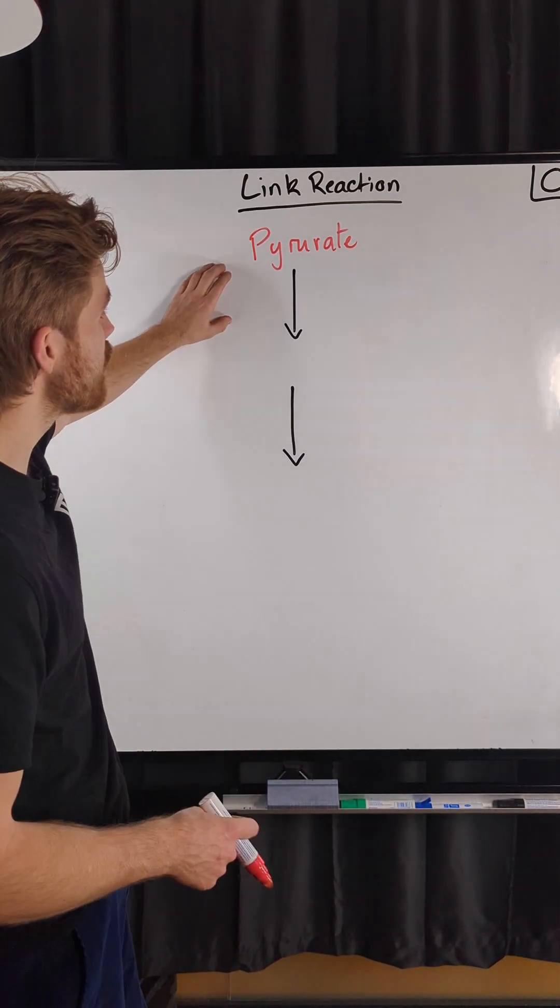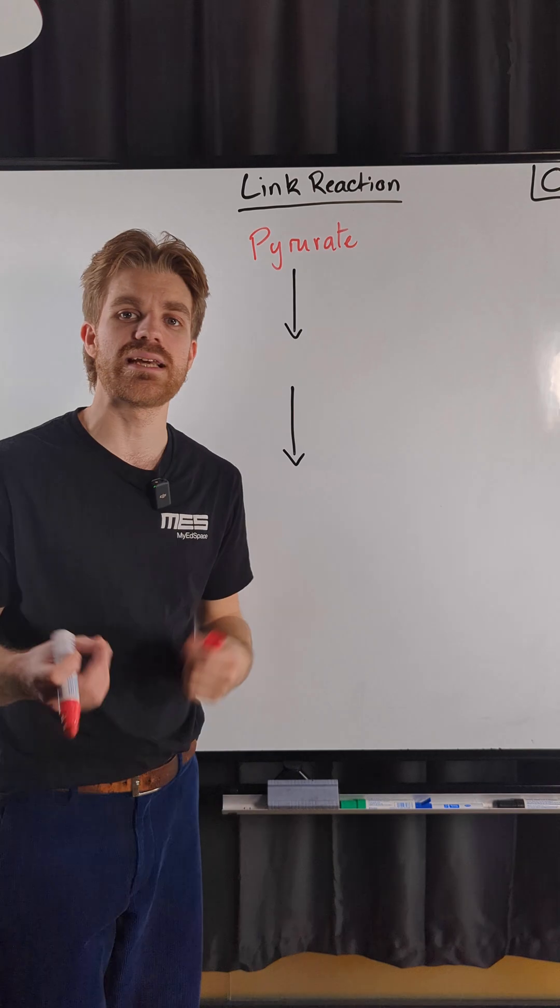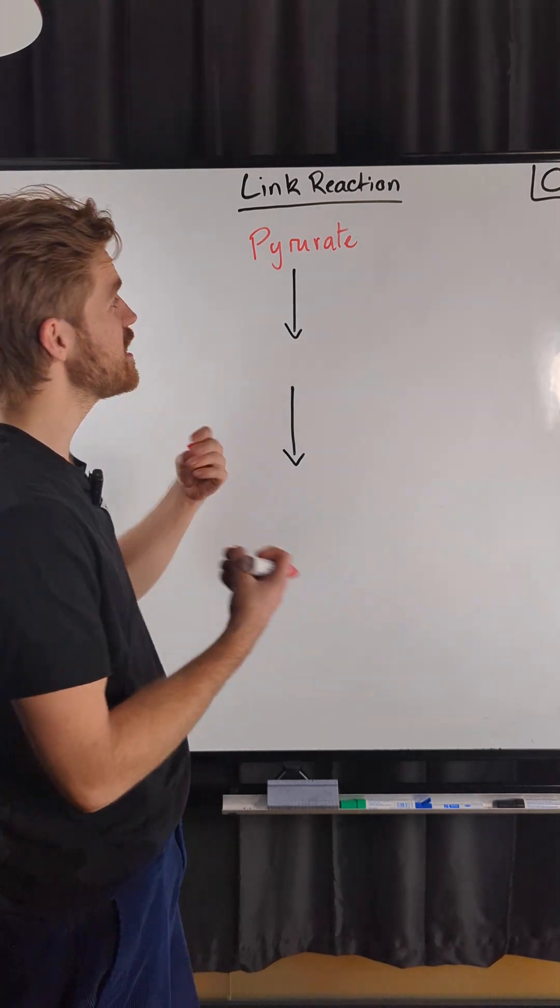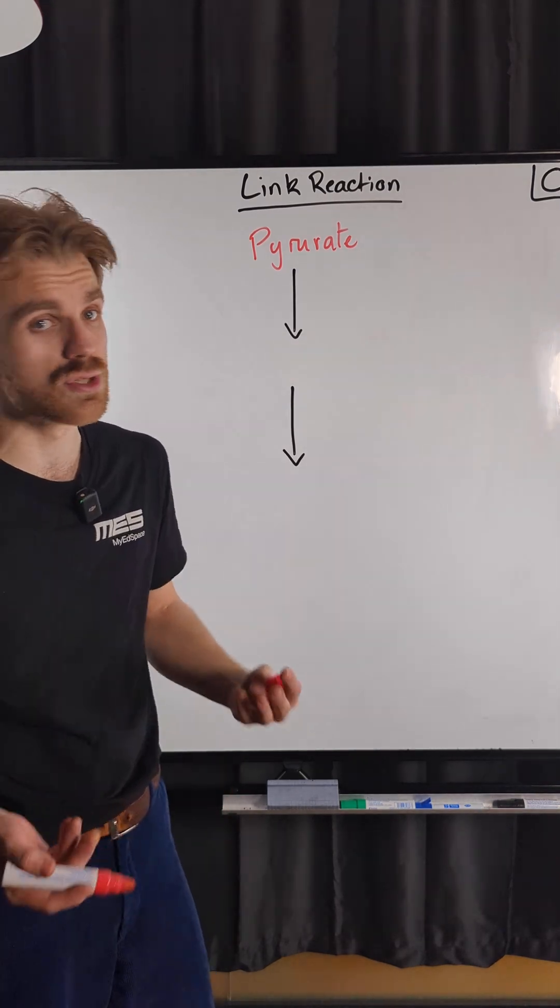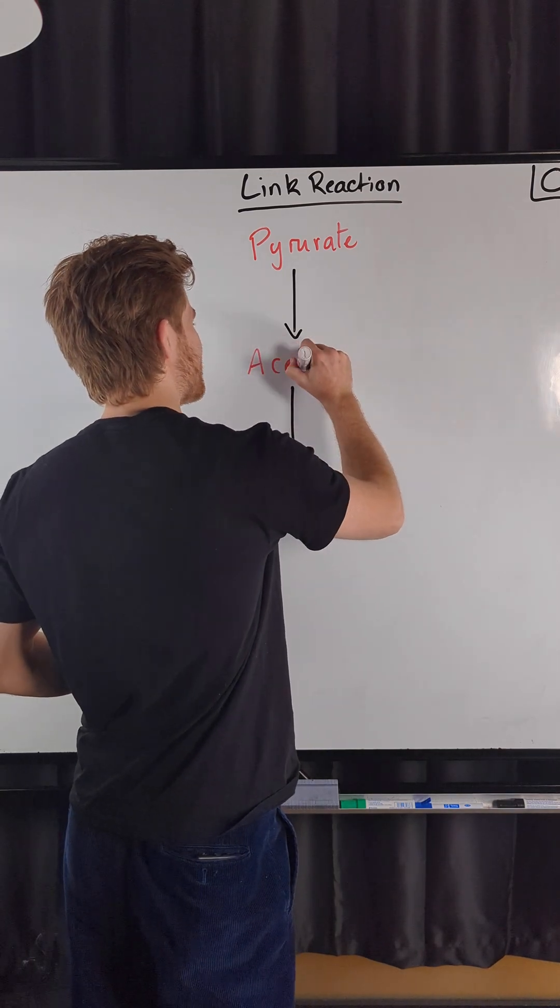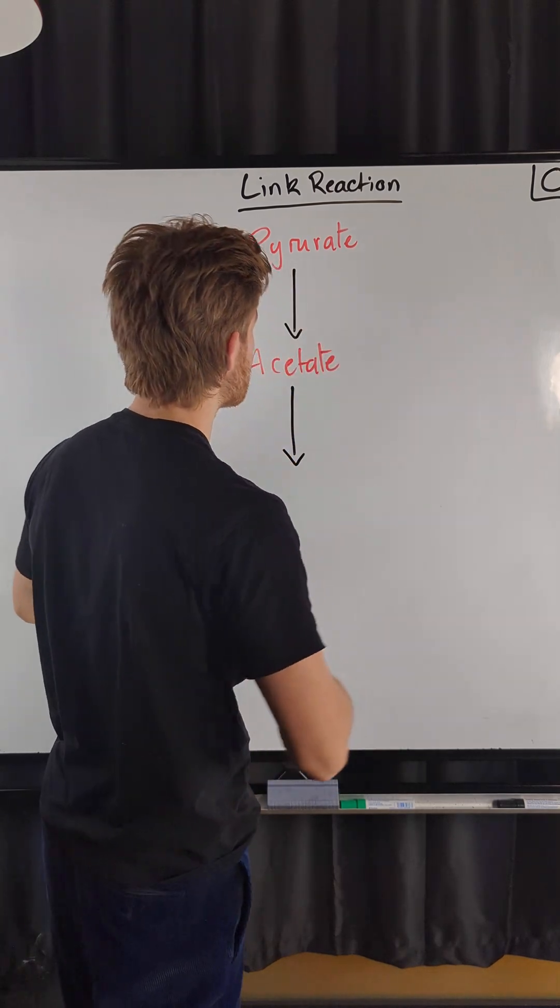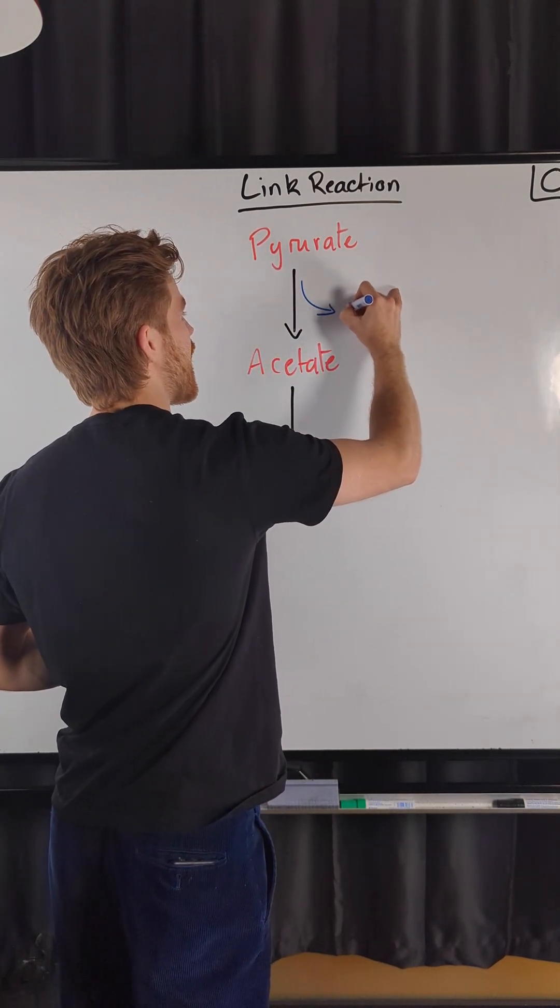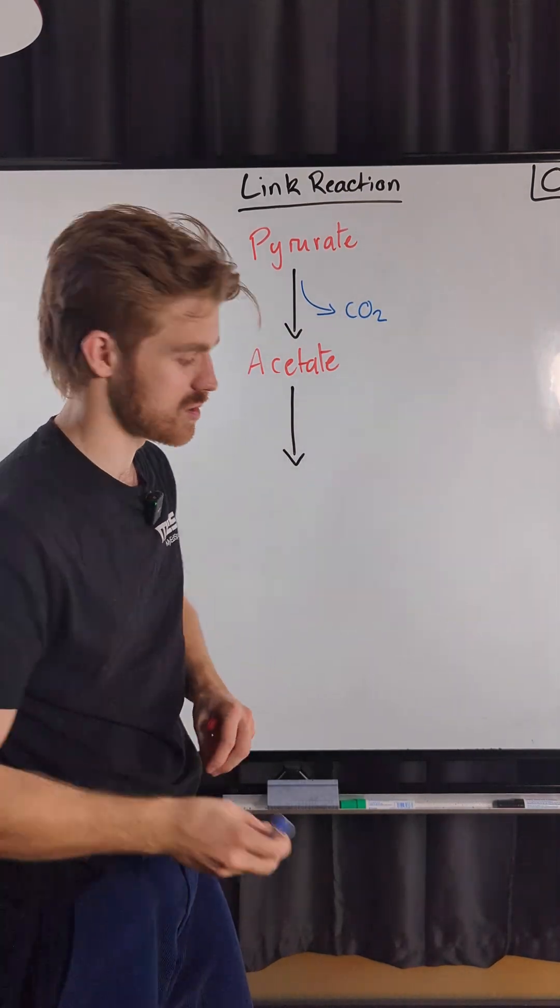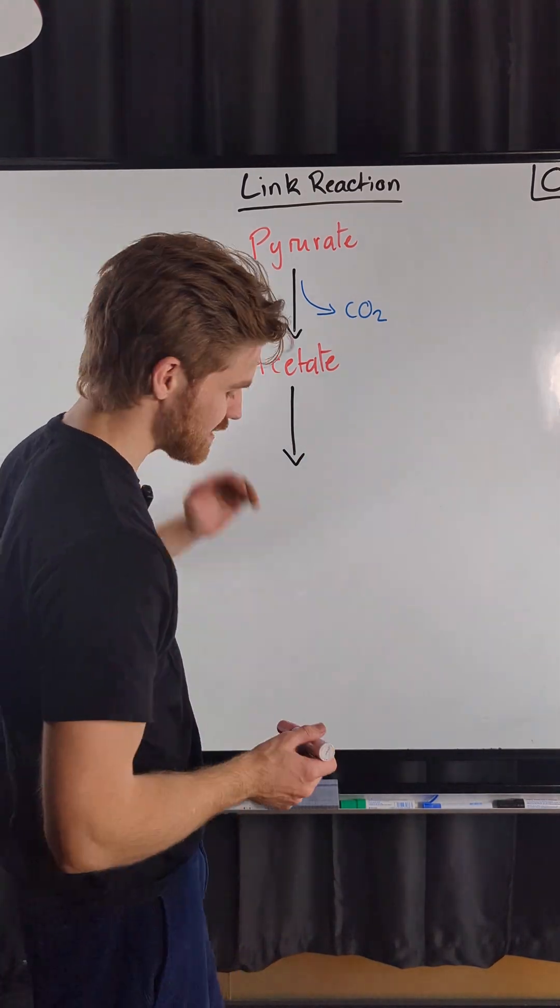And so the pyruvate is firstly going to be decarboxylated. Decarboxylation means removing a carbon dioxide molecule and to decarboxylate the pyruvate it's going to lose carbon. Pyruvate has three carbons and so it forms acetate. The acetate has only two carbons because the carbon dioxide has been produced there. This is the first time we see carbon dioxide being produced in aerobic respiration.